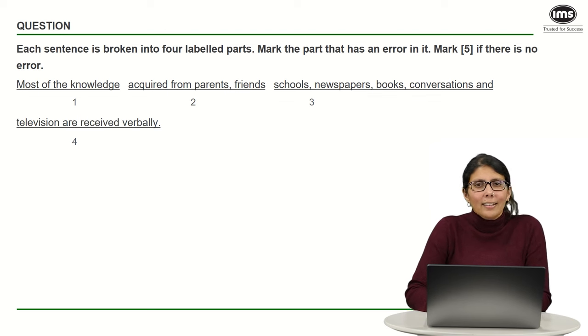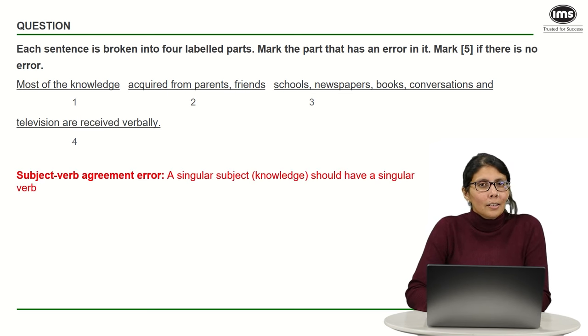Well, again, the same concept that we discussed earlier. Our subject here is singular, the knowledge, but where is the verb? The verb again is far away from the subject. It is in part number four. What we are really trying to say here is most of the knowledge is received verbally. So again, there is a subject-verb mismatch.